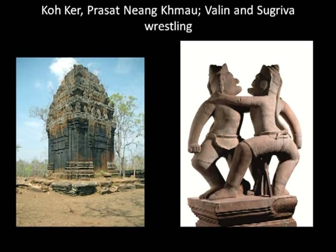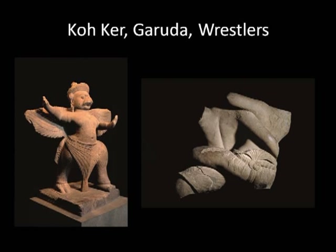There are nearly a hundred temples here too. One of them is Prasat Nyang Khmao, which you see on the right — made of laterite which has turned that strange black color. On the left you see a sculpture in the National Museum of the wrestling ape kings Valin and Sugriva, which is three meters tall. In spite of the enormous size of these sculptures, this is a site that has been very badly looted, and many of the monumental sculptures are now decorating museums not in Cambodia. Still luckily in situ is one of the most dramatic of all the Koh Ker sculptures — the striding Garuda, more than two meters tall.